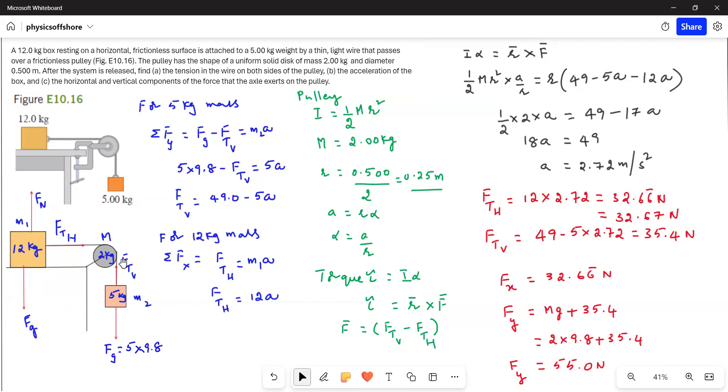This is the free body diagram of the given picture, and we have to write the force equations for both the 5 kg mass and 12 kg mass, and also for the pulley.